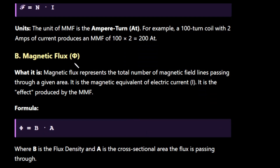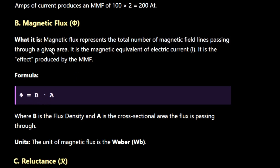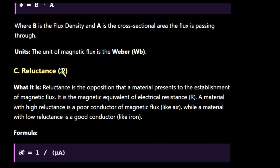Next is magnetic flux, represented by phi. Magnetic flux represents the total number of magnetic field lines passing through a given area. It is the magnetic equivalent of electric current and is the effect produced by MMF. The formula is phi = B × A, where B is the flux density and A is the cross-sectional area the flux is passing through. The unit for magnetic flux is Weber, represented by Wb.